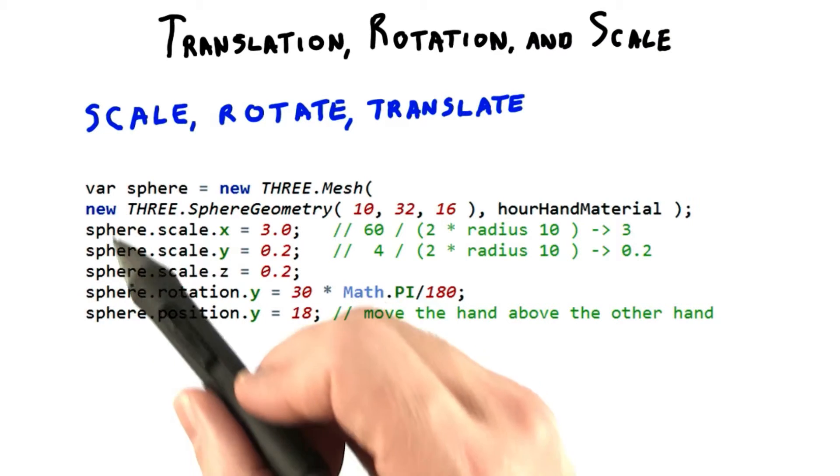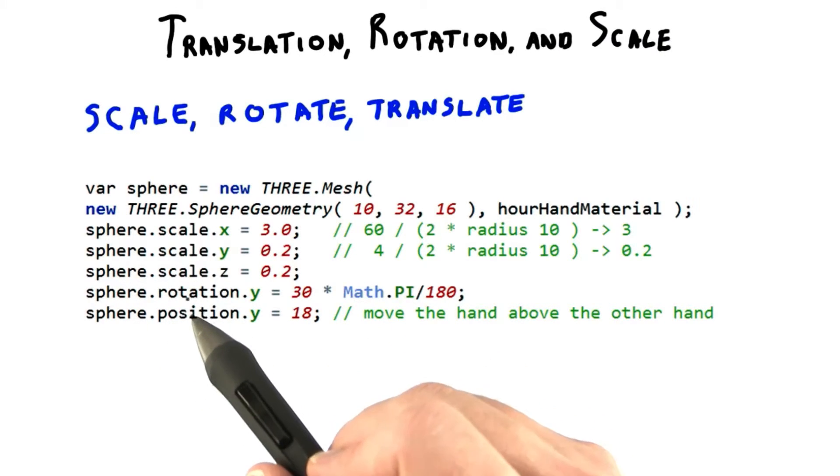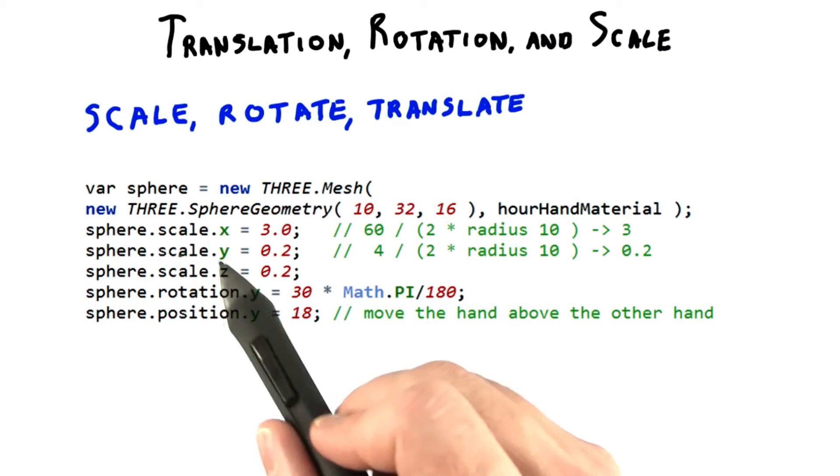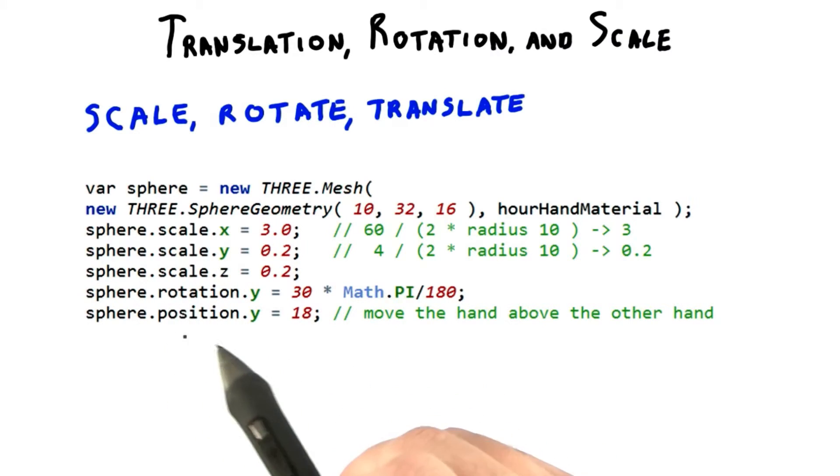It doesn't matter what order you set these parameters. 3JS always evaluates them in the order scale, rotation, and position.